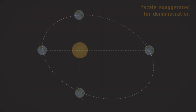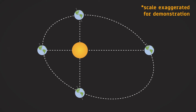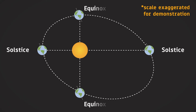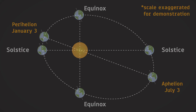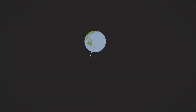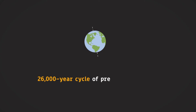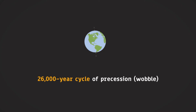Note that solstices are not the position when Earth is closest or farthest from the Sun. In fact, Earth is closest to the Sun in January. Also, the actual tilt, which is constant throughout a year, does change over long periods of time.